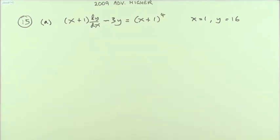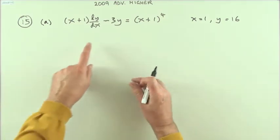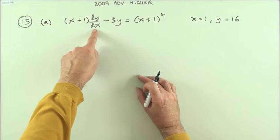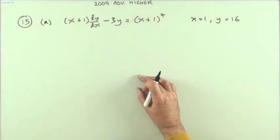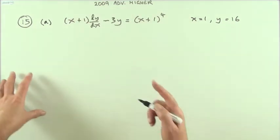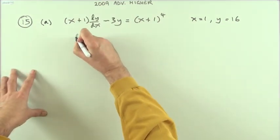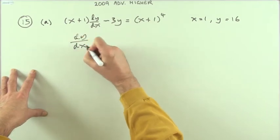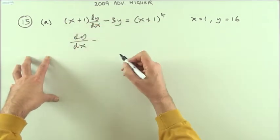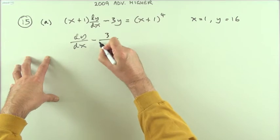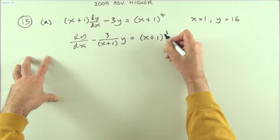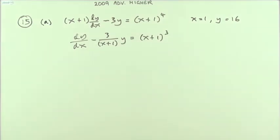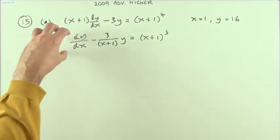I'm trying to establish the product rule because what I've got here is y and its derivative. If I had a function and its derivative there, that could go back to the product rule. First I'll split that up so it just says dy/dx — divide everything by (x+1), so it'll be minus 3 over (x+1) times y, and divide that side as well, dropping down to cubed.